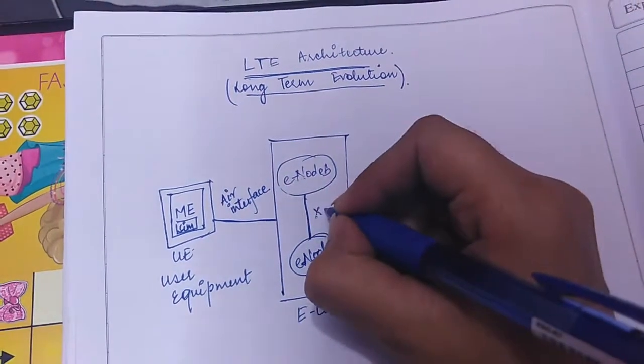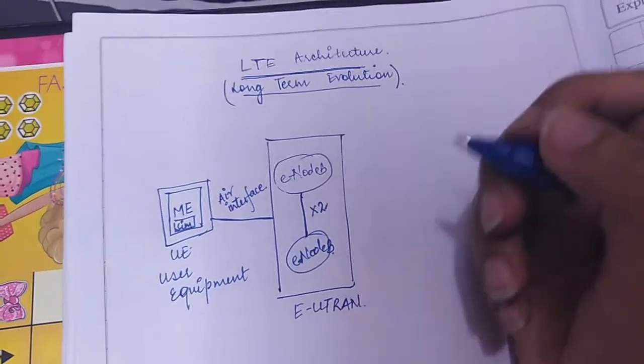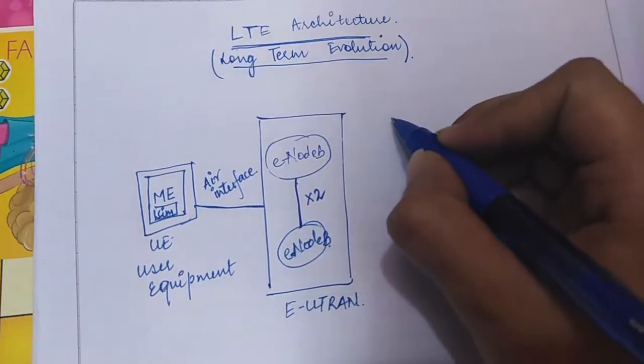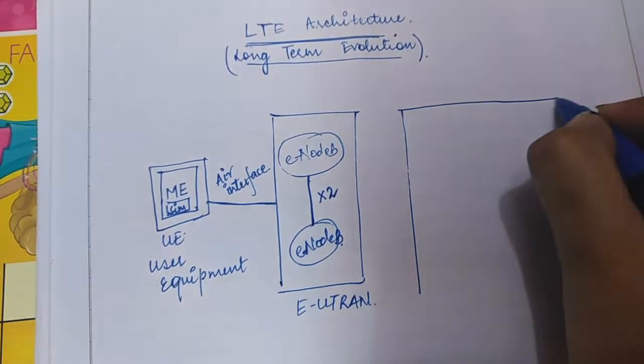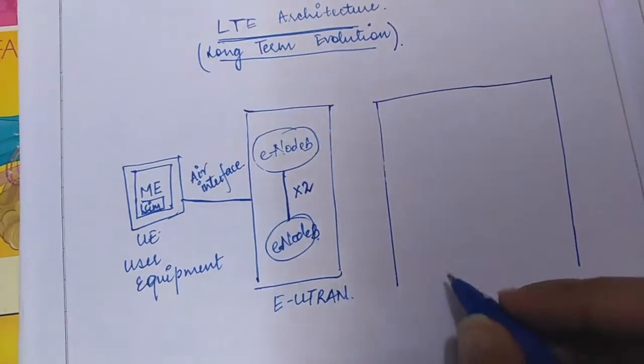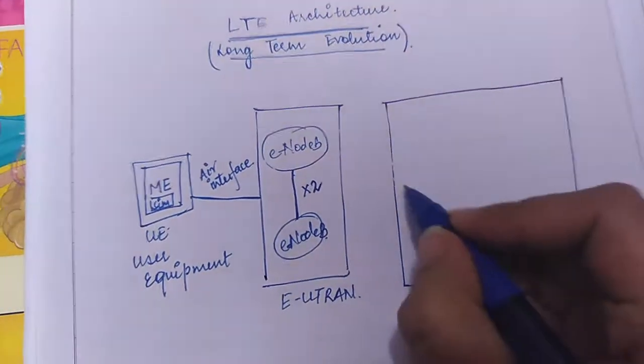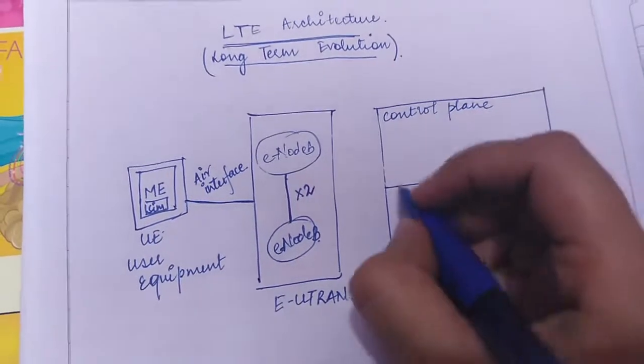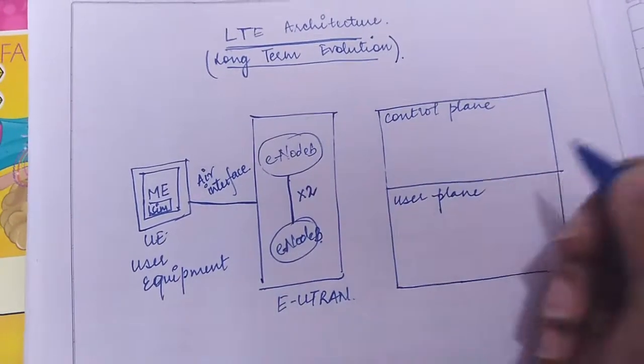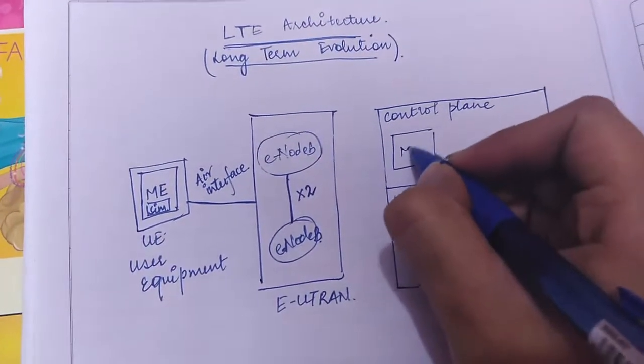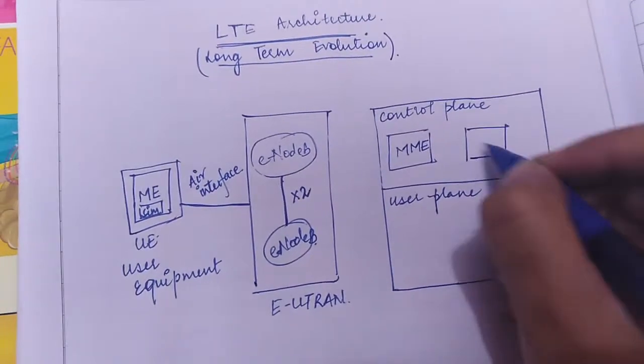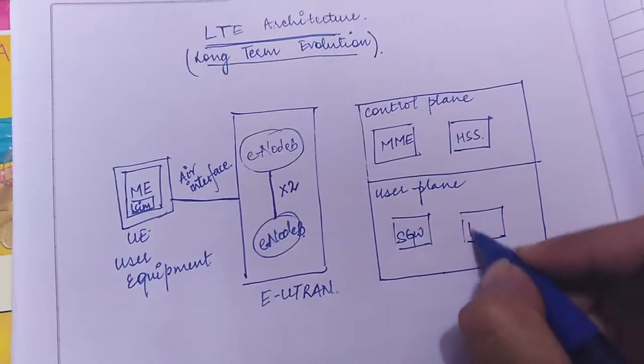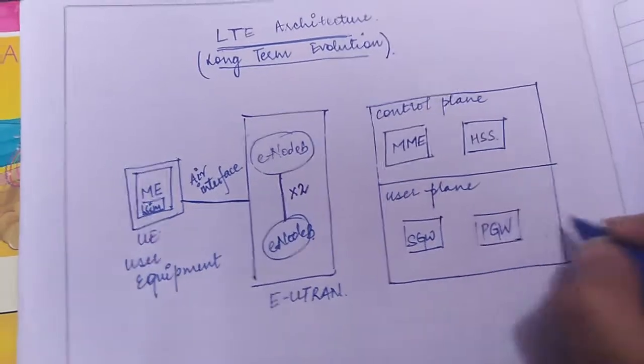Now for the LTE we have another box consisting of the control plane and the user plane. The upper part is the control plane and the lower part is the user plane. In control plane we have MME node and HSS node. In user plane we have serving gateway node and P gateway node that interacts to the internet.